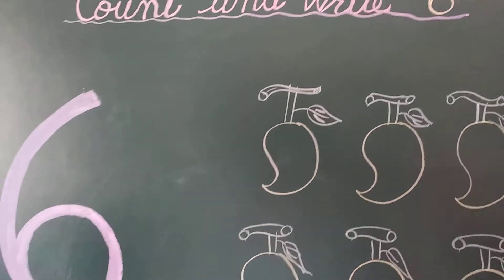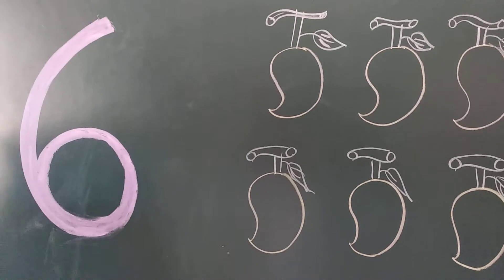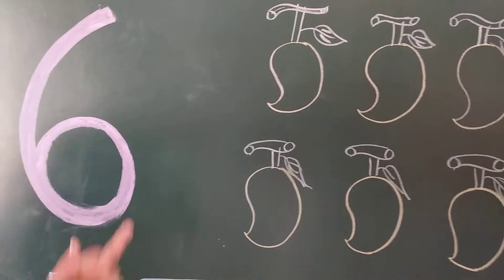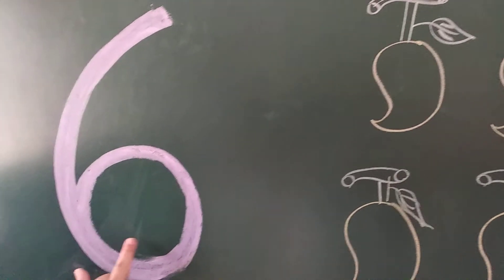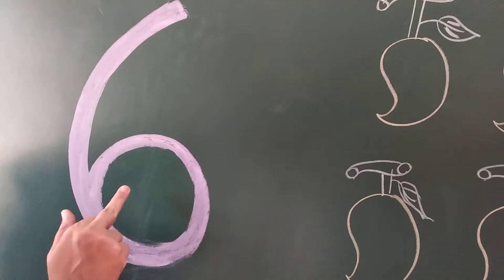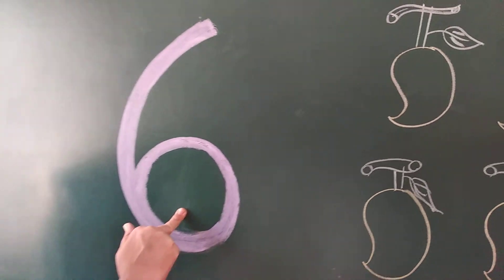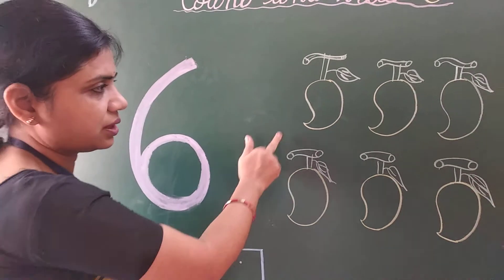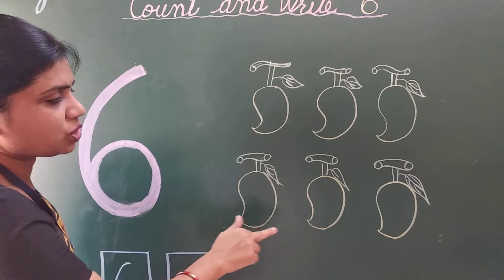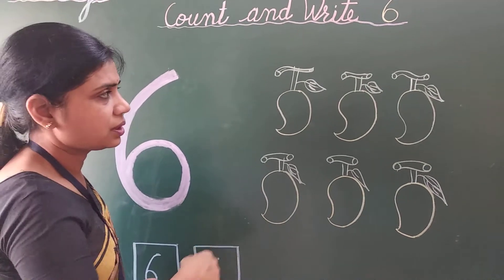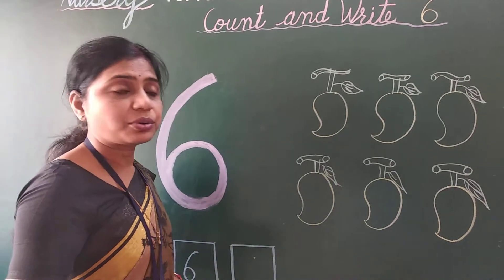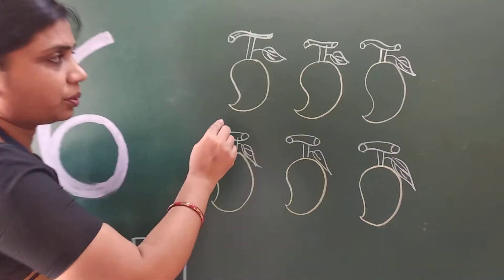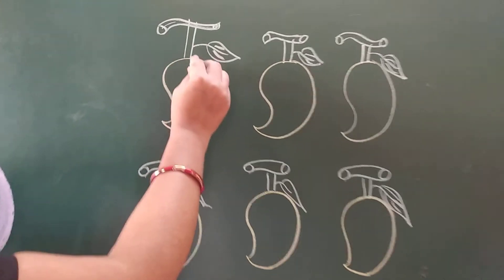Ok students, now tell me how we write number 6? See, this is number 6. But before we write the number 6, we count the objects. Now see here — here is the picture of mangoes. So first we count the mangoes. How many mangoes are here? Ok, count with me.